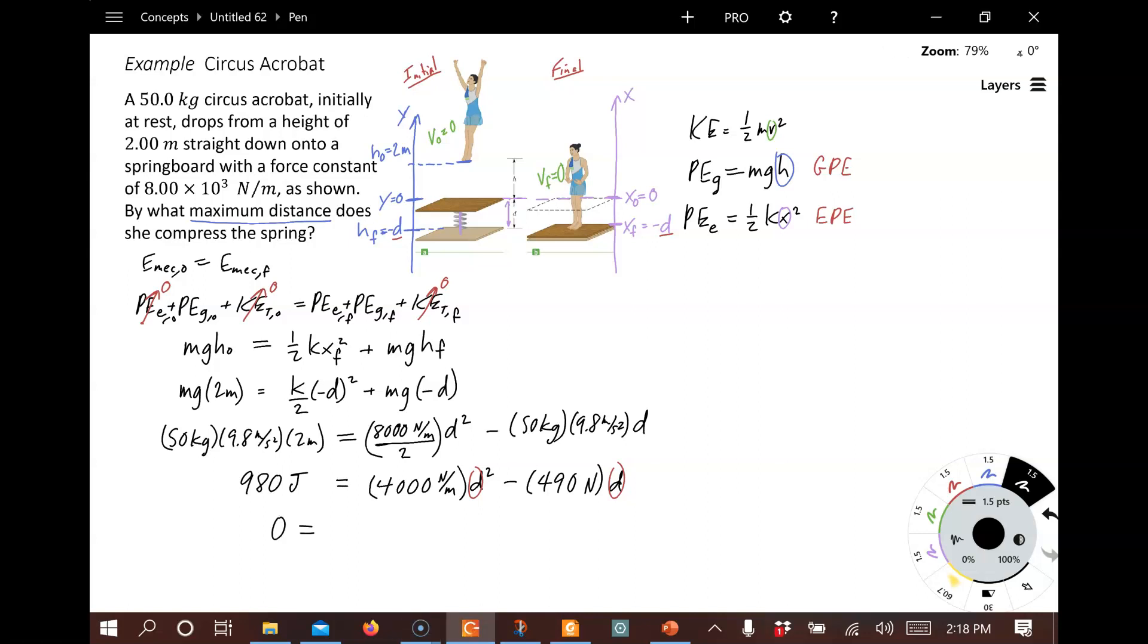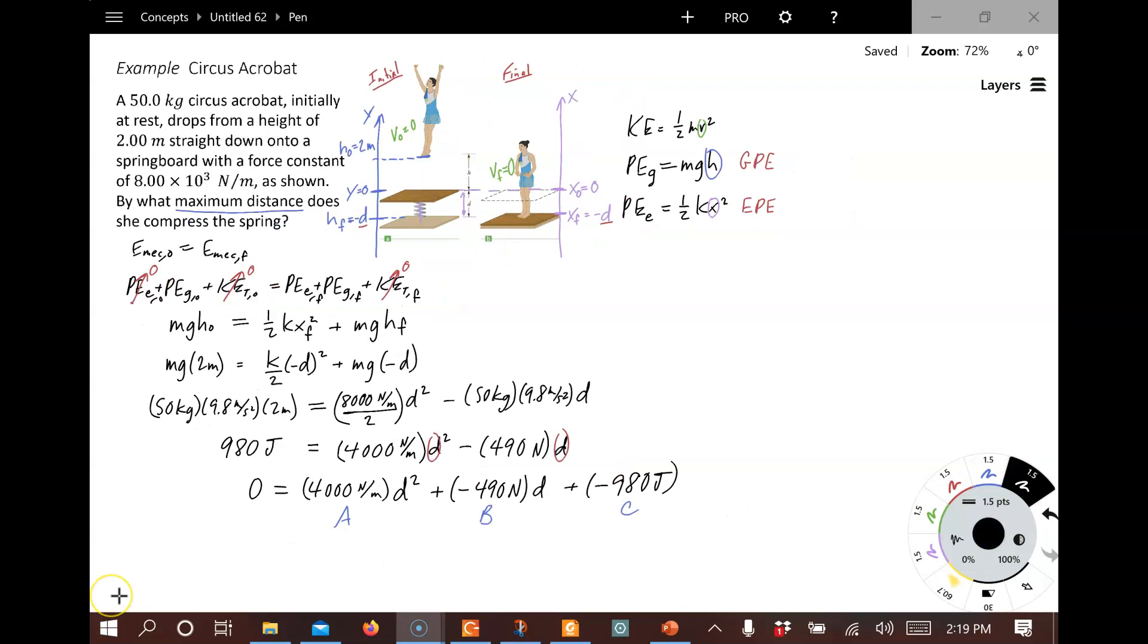And we're going to get 4,000 newtons per meter times D squared plus negative 490 newtons times D plus negative 980 joules. And so we look at this and we identify this as your A, your B, and your C. We need to plug all this information into the quadratic equation and see what the answers are for D.